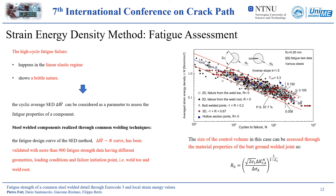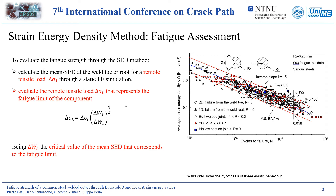This method has been validated with a huge number of fatigue strength data from welded joints with fatigue failure both from the weld toe and root. As regards the practical application of this method for fatigue assessment, under the hypothesis of linear elastic behavior, it is enough to calculate, through a finite element analysis, the strain energy density at the weld toe or root for a generic remote applied load. Knowing the critical value of the strain energy density — intended as the value that leads the component to fail at two million cycles — we can obtain the fatigue limit of the component in terms of nominal stress, using the equation reported in the present slide.